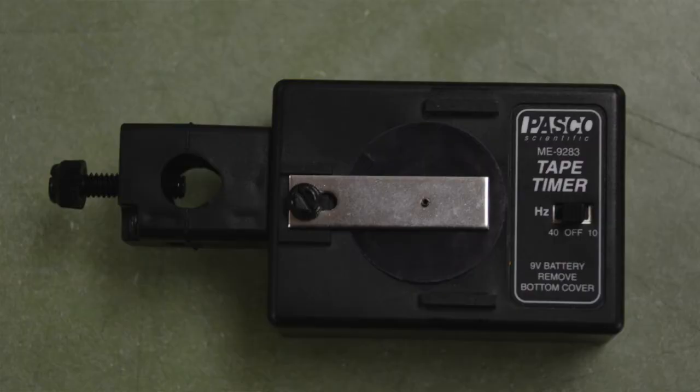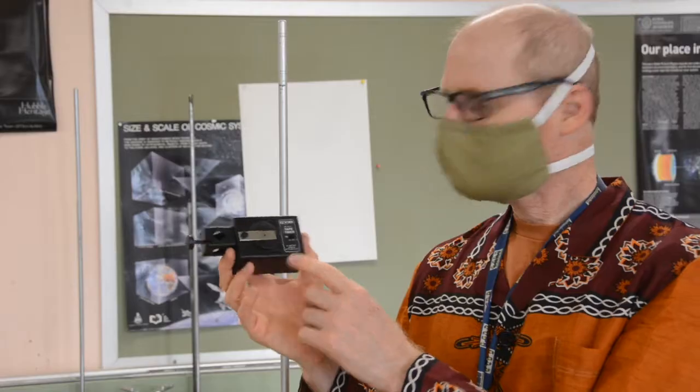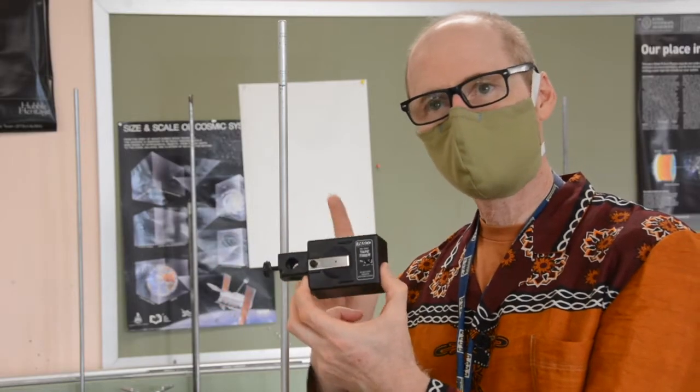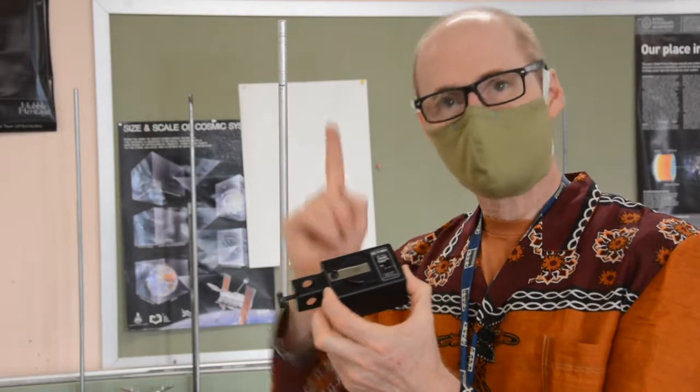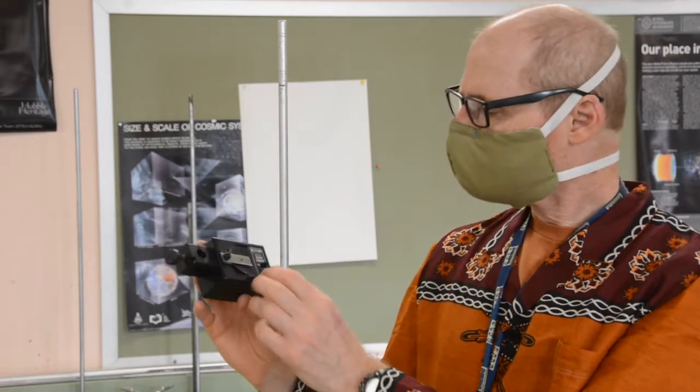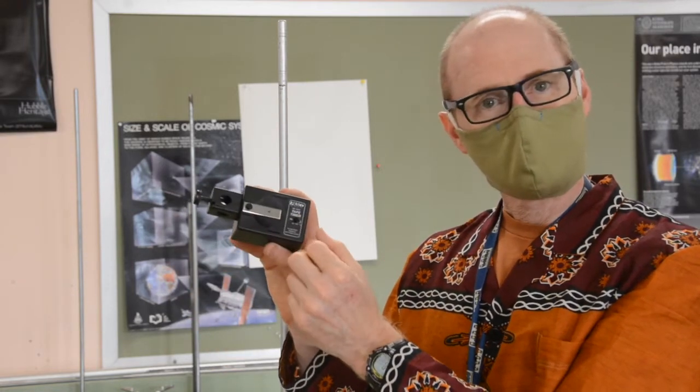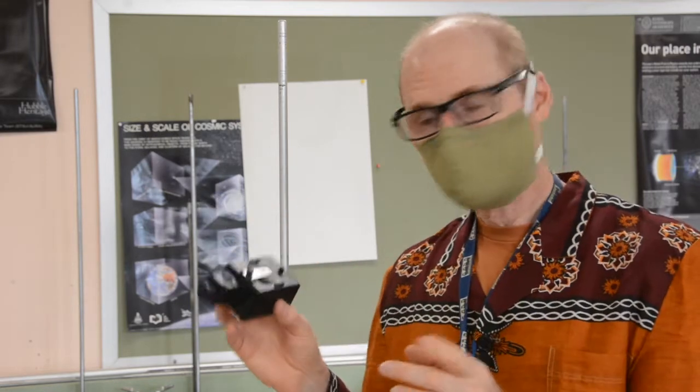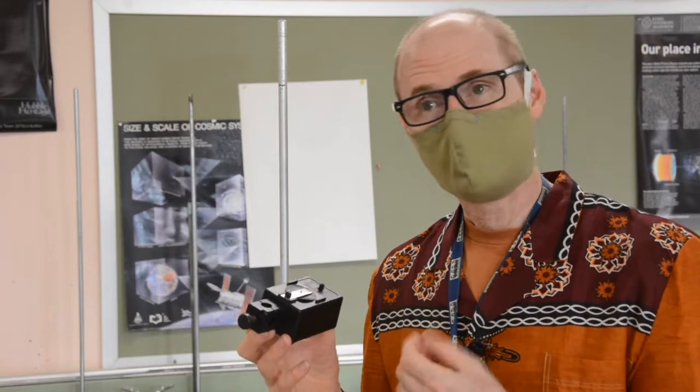This is a tape timer. The guts of this is an electronic device that makes a tiny little rod poke a certain number of times, either 10 times per second or 40 times a second. You're going to be using it on 40 times a second. We use this to make dots on a piece of paper every 10th or 40th of a second.